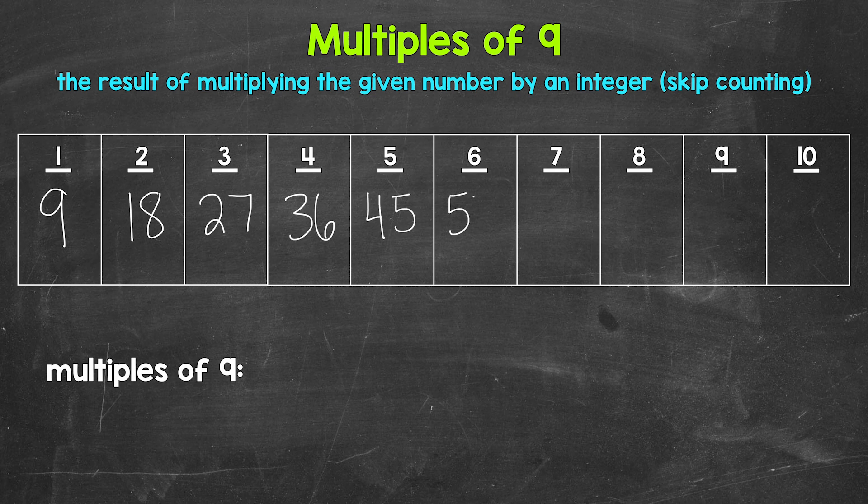6 times 9 is 54. 7 times 9 is 63. 8 times 9 is 72. 9 times 9 is 81. And 10 times 9 is 90.